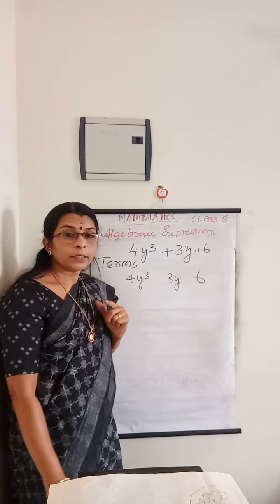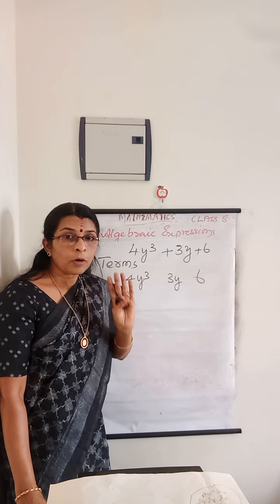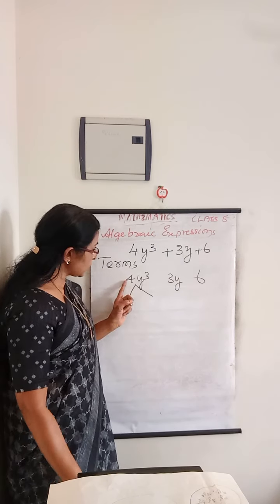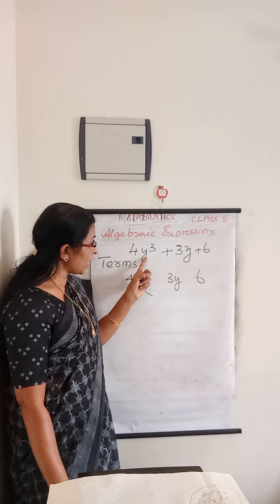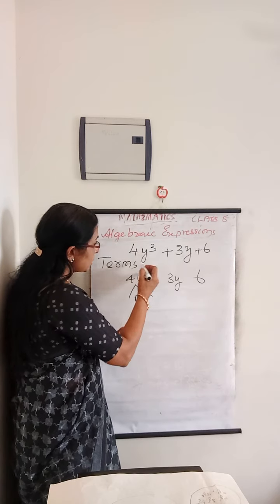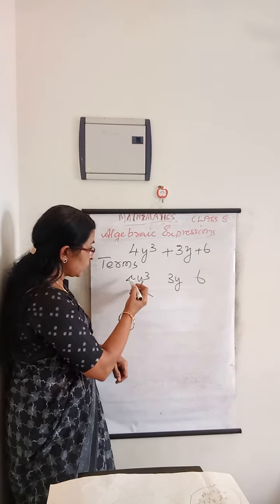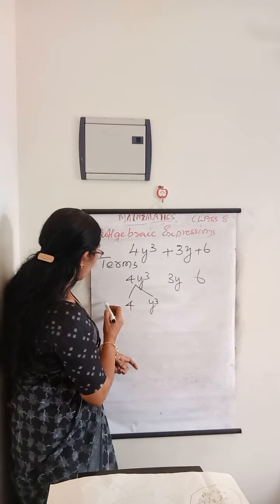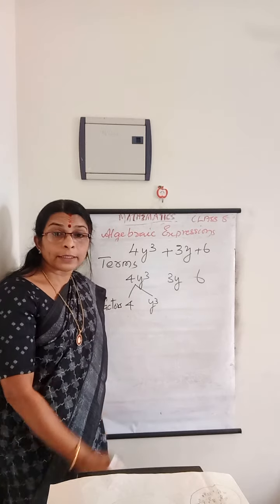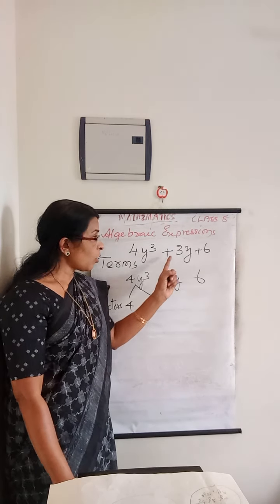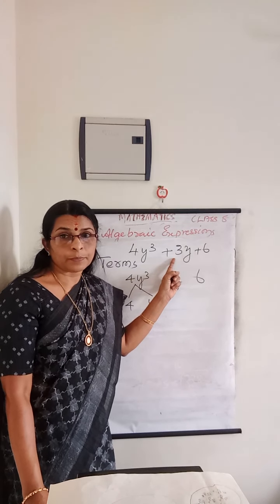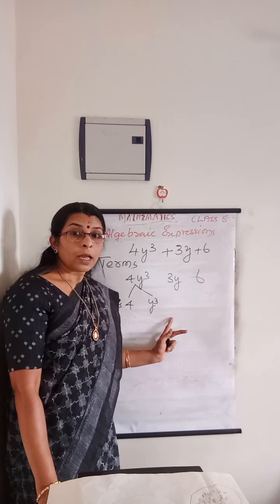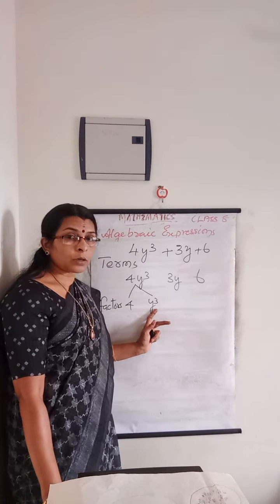All algebraic expressions are made up of terms. Each term is a product of a constant and a variable. Here we use the variable y and constant 4 — the first term is a product of y cube and constant 4. This 4 and y cube are called factors — factors of the term. All algebraic expressions are made up of terms, and each of those terms are made up of constants and variables, which are called factors.